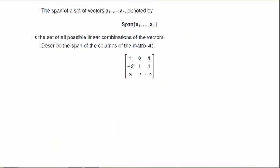The span of a set of vectors a1 through an is denoted by span{a1 through an}, and this is a set of all possible linear combinations of the vectors.